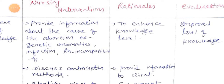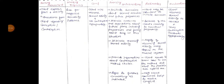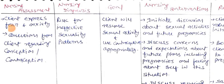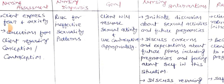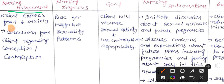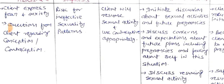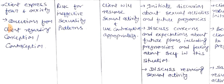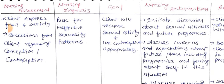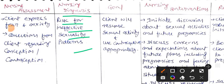The third nursing diagnosis is: risk for ineffective sexuality pattern. After nursing assessment — where the client expressed fear and anxiety, and questions were asked regarding conception and contraception — the nursing diagnosis is risk for ineffective sexuality pattern. The goal is that the client will resume sexual activity and use contraceptives appropriately.